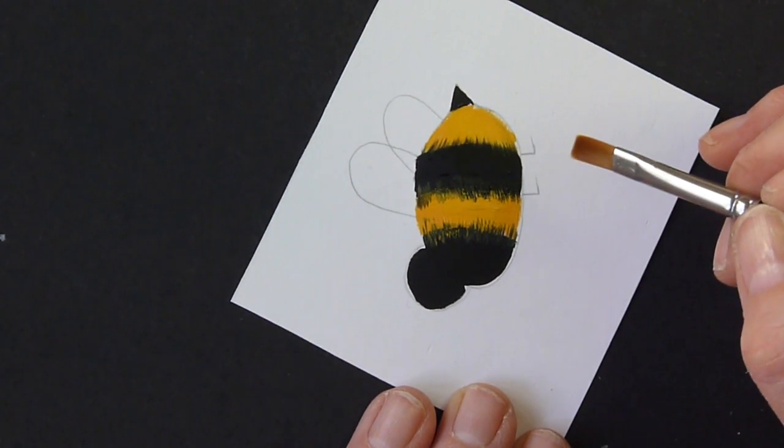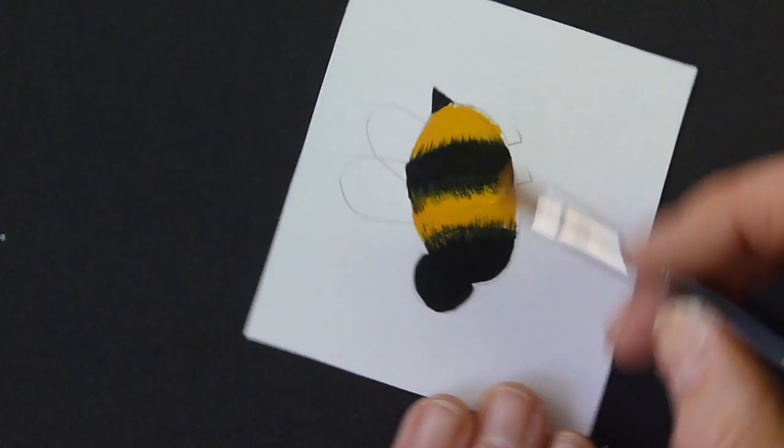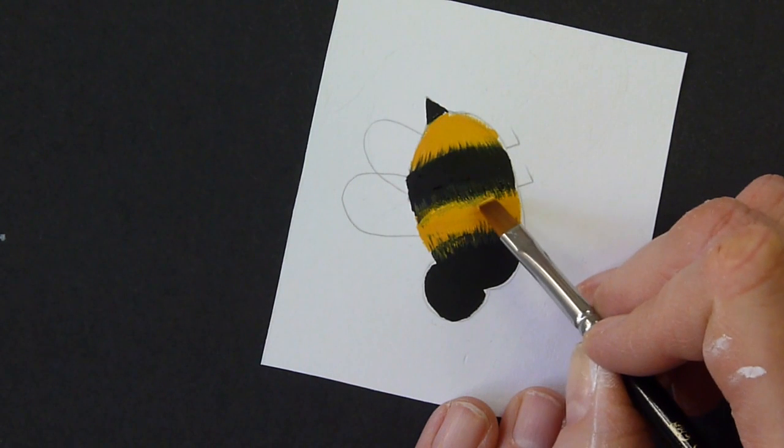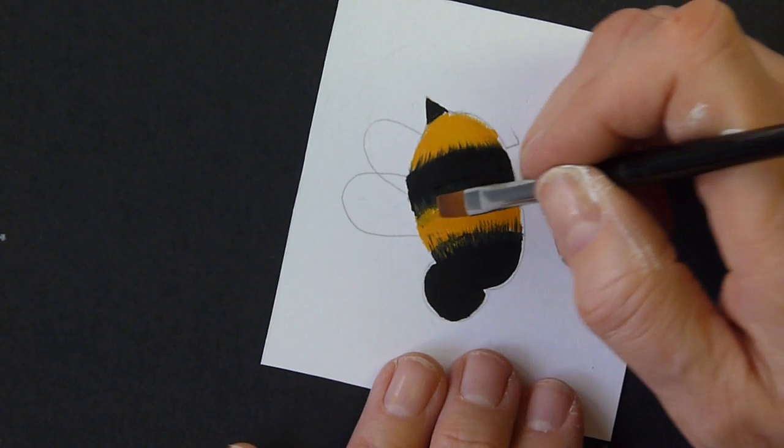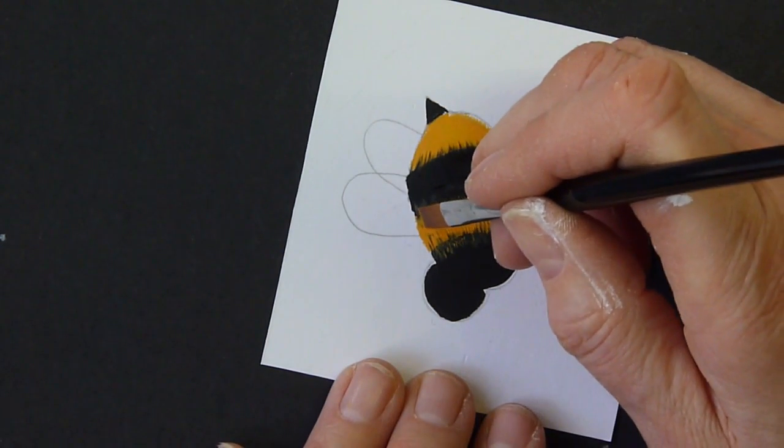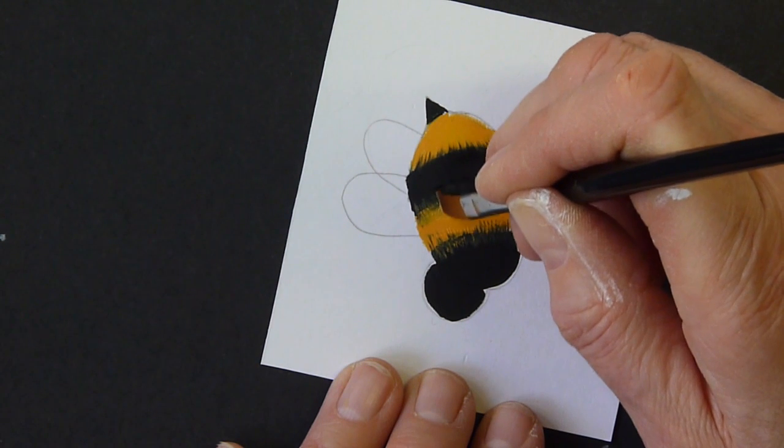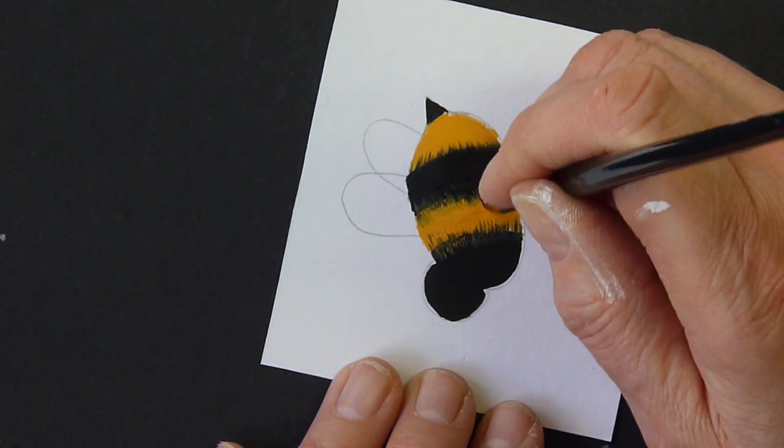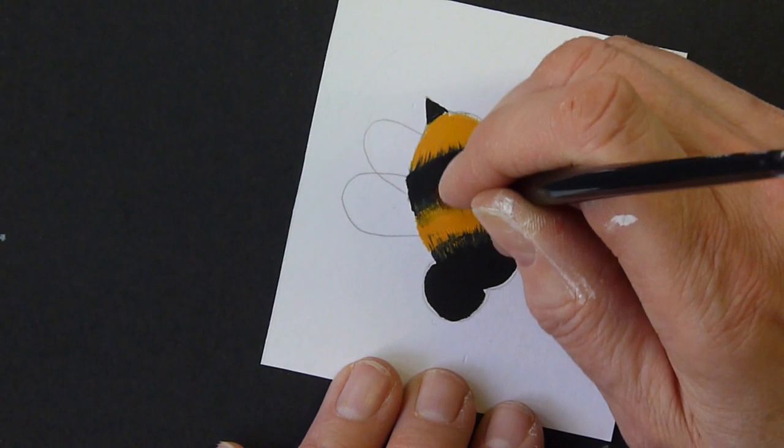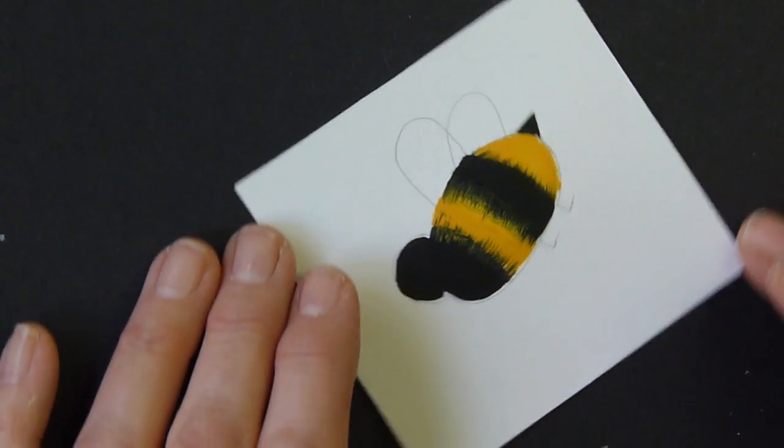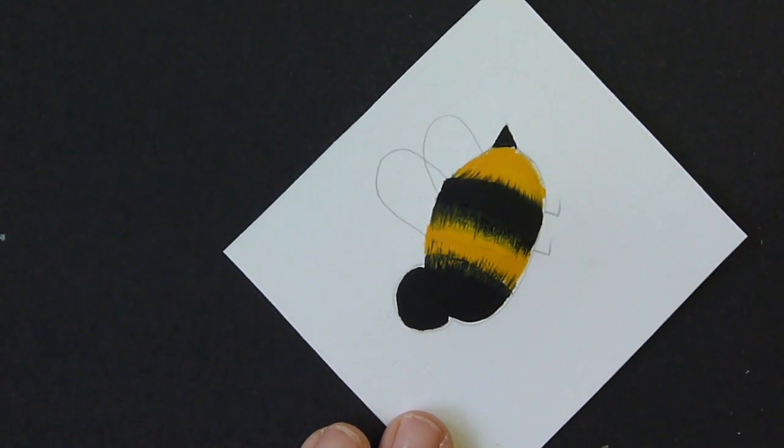This one here may have been just slightly a bit too wet. I'm tempted just to put some yellow back over the top. I think I may have had just a bit too much black on that edge. Let's see if it can work. There we go. That's better. So we've got yellow black, yellow black.